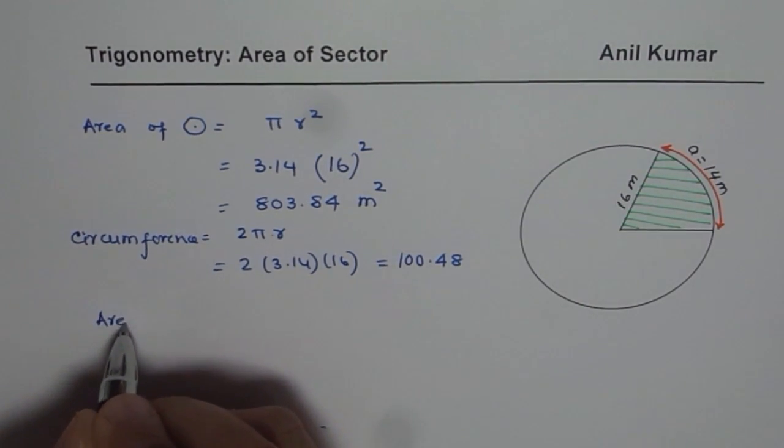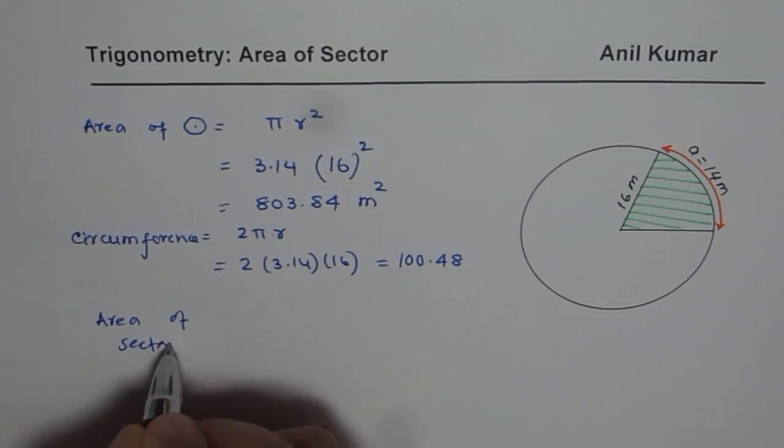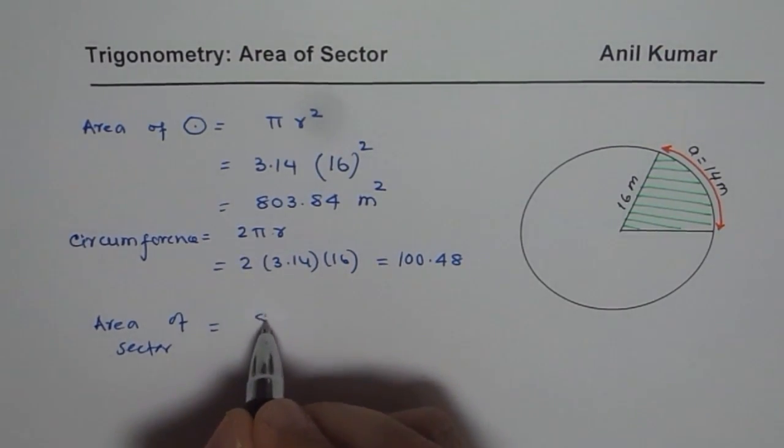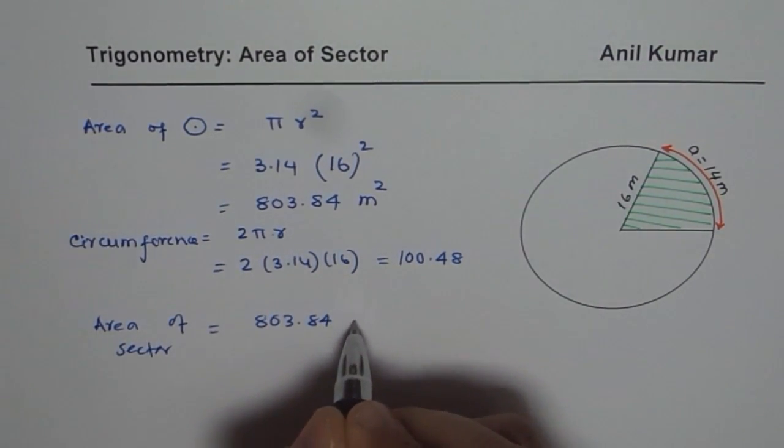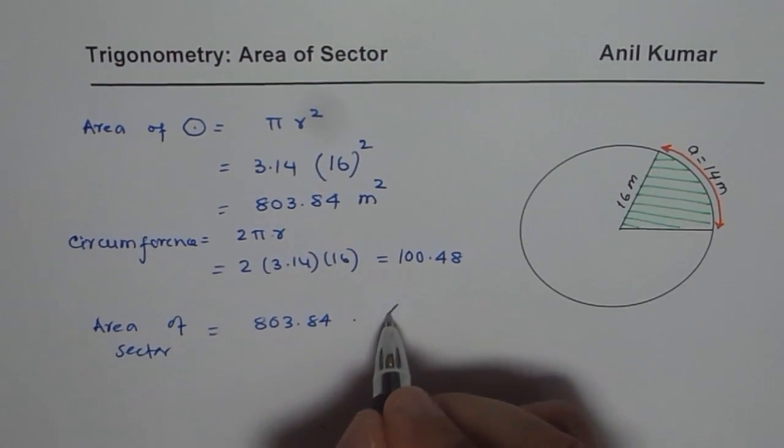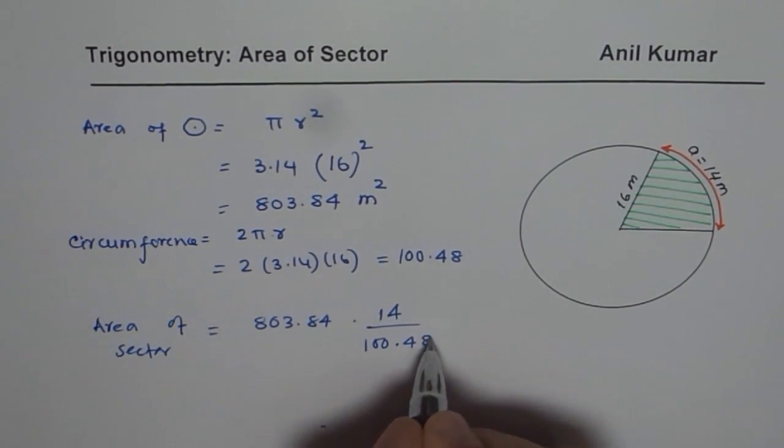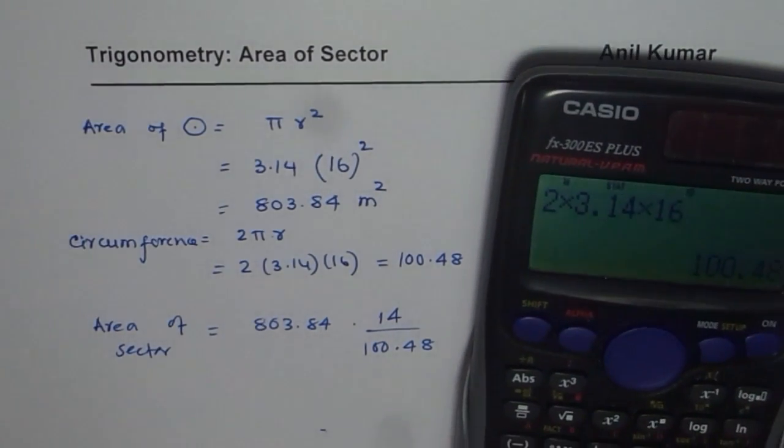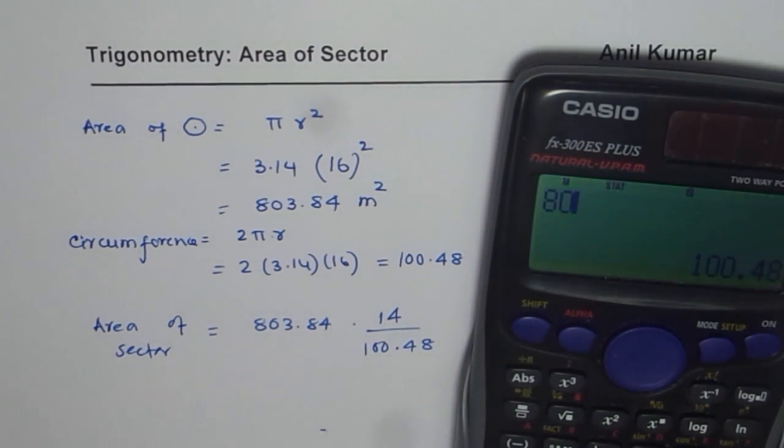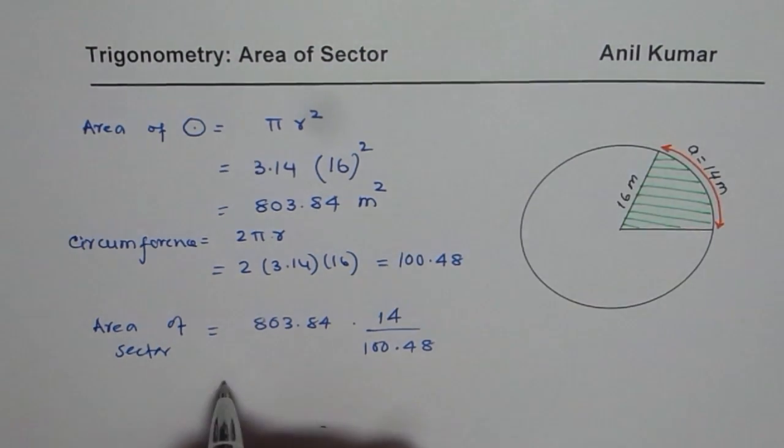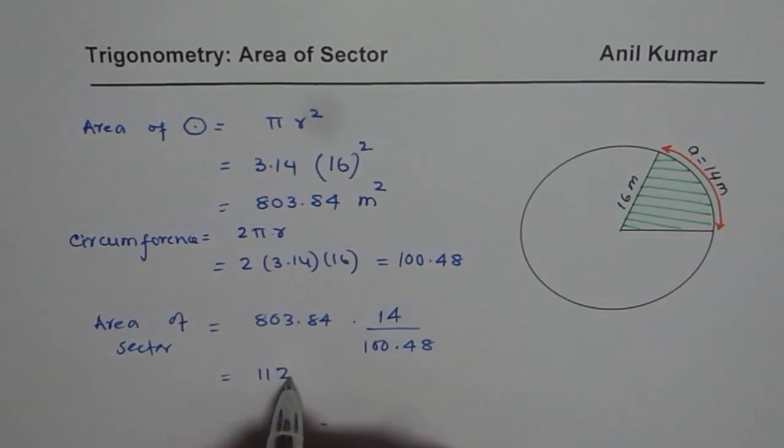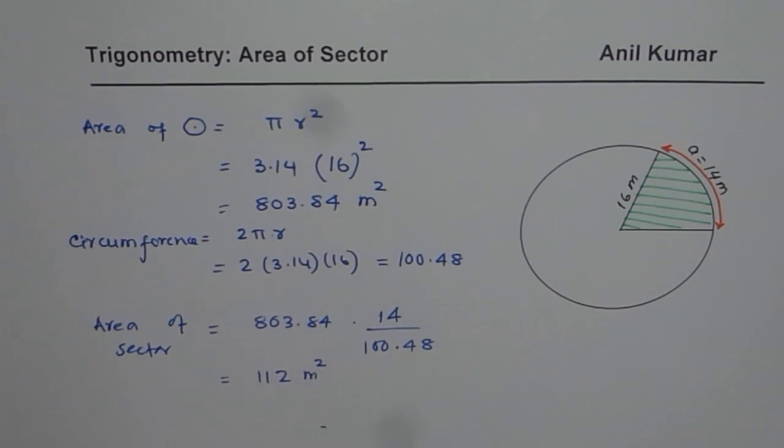So now we can find area of sector as area of sector will equal total area 803.84 times the arc length given to us which is 14 divided by circumference which is 100.48. Let us calculate the value. We have 803.84 times 14 divided by 100.48 so we get 112 meters squared as area of the sector.